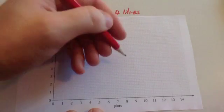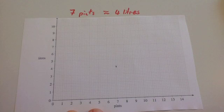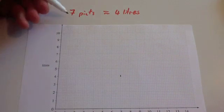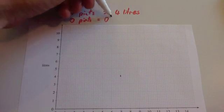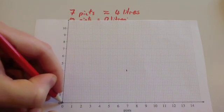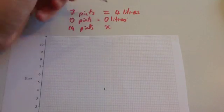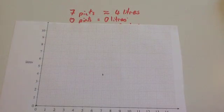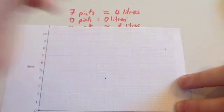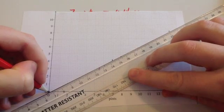7 pints, 4 liters — so that point goes here. Next, we need at least one more point. I tend to want three points, but at a minimum you need one more. Zero pints will be equal to zero liters — obviously if you've got no pints, it's no liters, so this graph will go through the origin, unlike the last one. And if you were to double it, 14 pints is approximately equal to 8 liters. The horizontal axis goes up to 14, which is nice. So we plot 14 pints at 8 liters, then get your ruler and draw a nice straight line through those points.